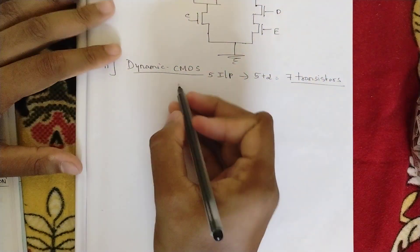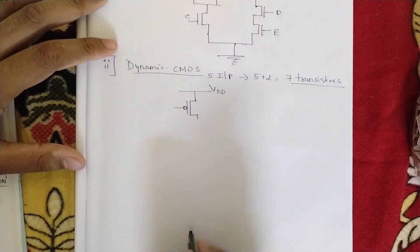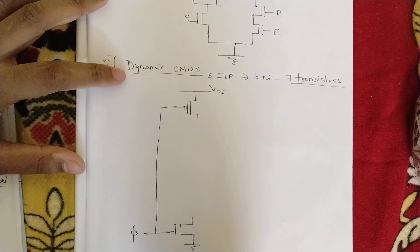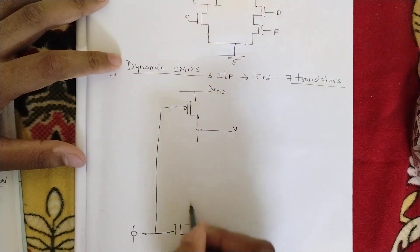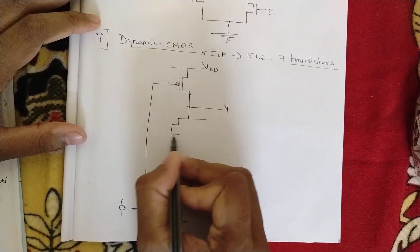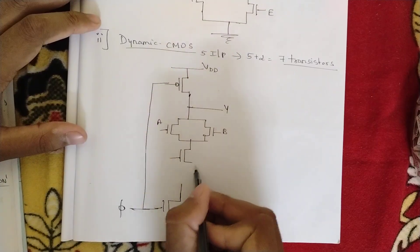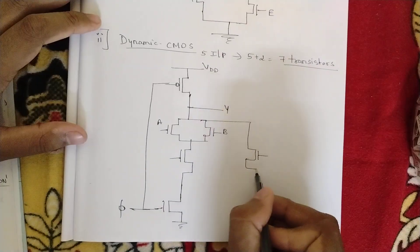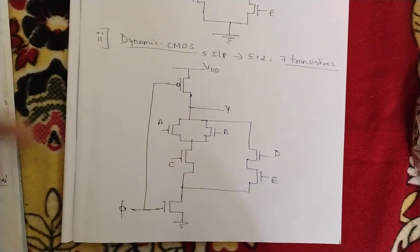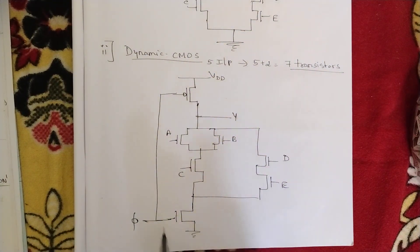Let us draw it. First the VDD part: one PMOS, and here one NMOS transistor where the two terminals are shorted and one common clock signal is applied. Here we are checking the output y. In between we are drawing the NMOS logic: a+b in parallel, then this whole branch in series with c, then d and e. This is the diagram of dynamic CMOS logic — 5 inputs and 7 transistors with one clock signal.